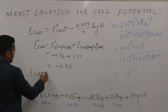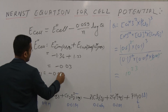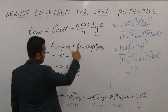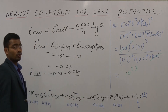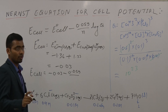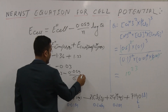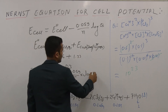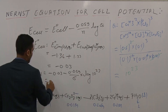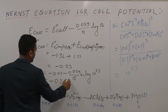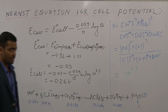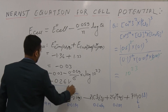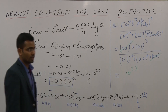E_cell = E°_cell − (0.059 / 6) × log Q. The total number of electrons transferred is n = 6. Calculating gives E_cell = −0.26 V. Since the value is negative, the cell is non-spontaneous — the cell is dead.